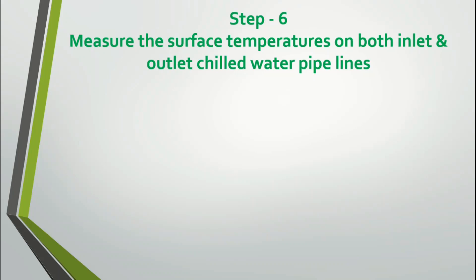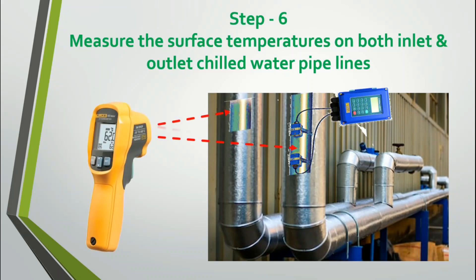In Step 6, measure the surface temperatures of both the inlet and outlet chilled water pipelines. Remove the insulation on the inlet side as well and measure the surface temperatures on both inlet and outlet. This is an easy method of calculating the temperature difference in the chilled water line. However, if you already have installed temperature sensors, thermostats, or RTDs in these chilled water lines, they will give a better reading.